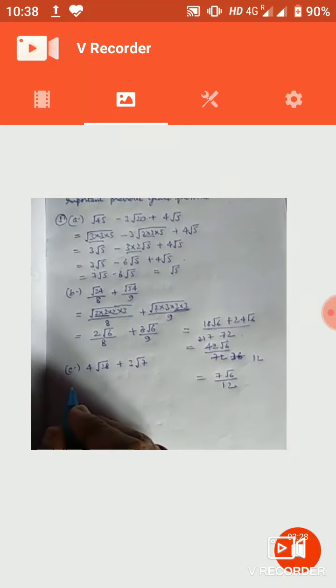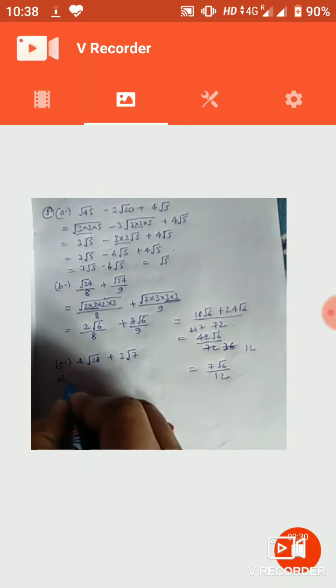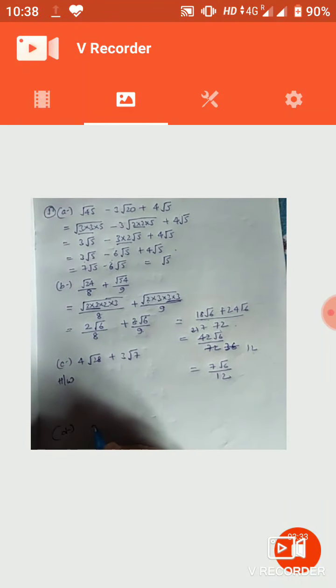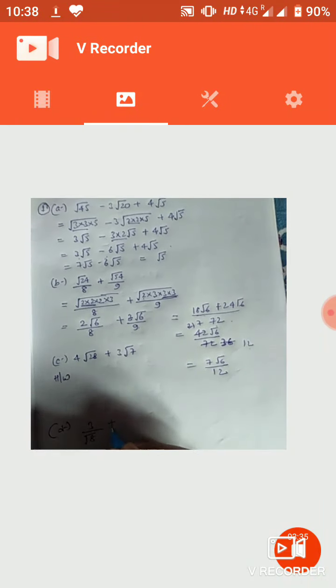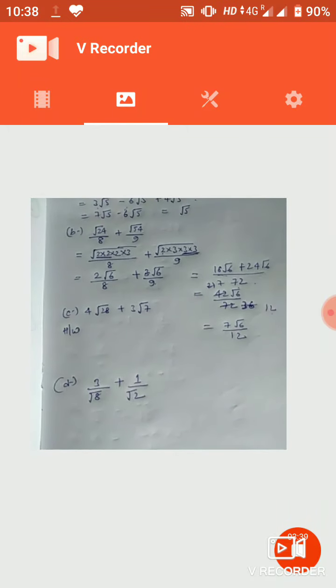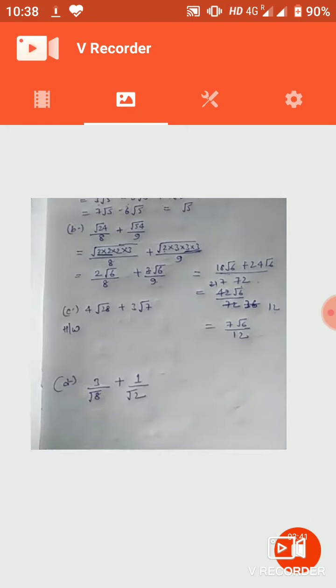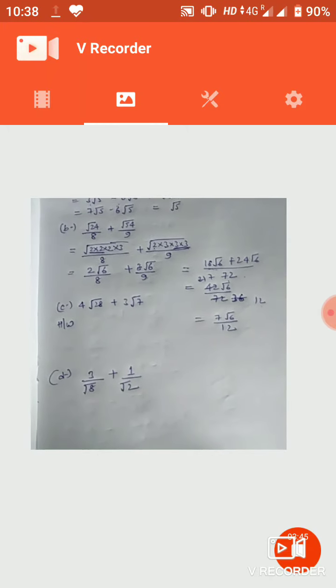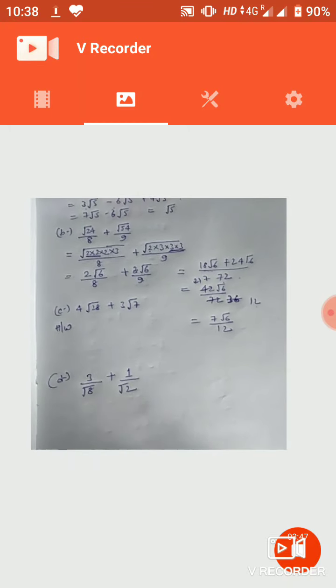ठीक है, इस वाले को आप स्वयं करें। इसमें एक और जोड़ देता हूँ: 3 upon √8 plus 1 upon √2 — इन दोनों को आप स्वयं करें, अब practice भी हो जाएगी और आपको समझ में भी आने लगेगा।